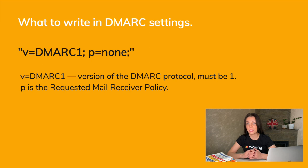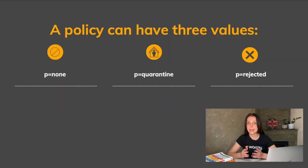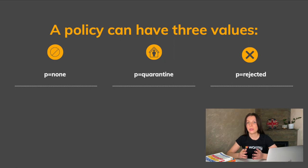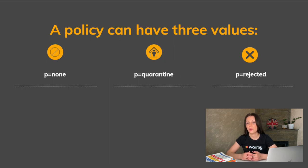The p= tag is the requested mail receiver policy — what exactly to do with the letter if DKIM did not pass the check. A policy can have three values: p=none, which takes no special action and leaves everything at the mail provider's discretion; p=quarantine, which sends the email to spam; and p=reject, which does not accept the letter at all. In addition to the required tags, you can specify additional ones indicating which reports to send, where to send them, or what percentage of emails to apply the policy to. You will find the additional tags and their descriptions in the resources section for this video.